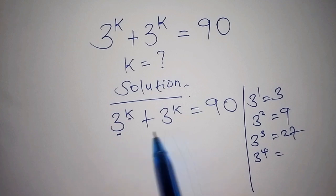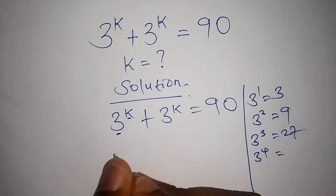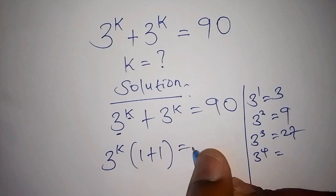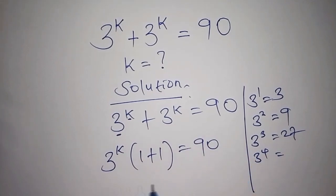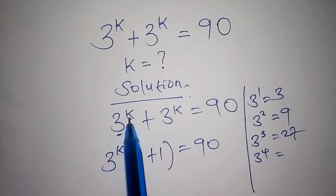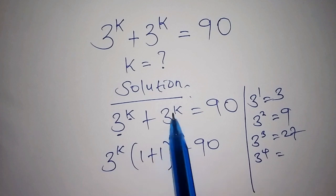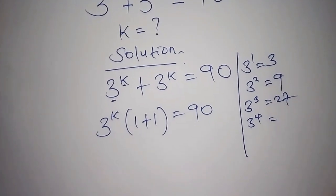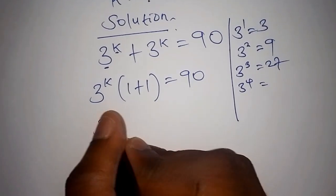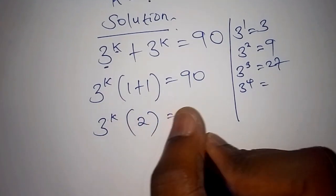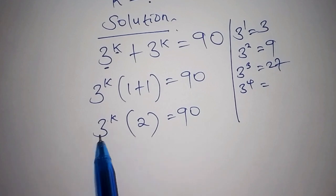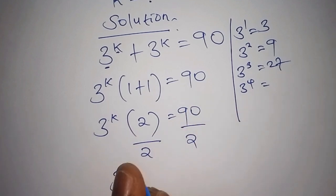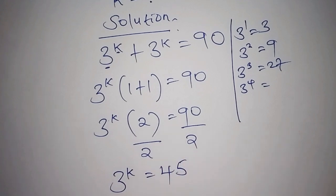That is why it is important for us to factorize 3 to the power of k. We can write it as 3 to the power of k times (1 + 1) equals 90. So 3^k × 1 is 3^k, plus 3^k × 1 is 3^k, which gives us back 90. Now 1 + 1 is 2, so we have 3^k × 2 = 90. Dividing both sides by 2 gives us 3^k = 45.